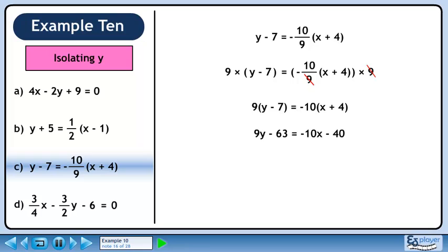Distribute 9 through the brackets on the left side. Distribute minus 10 through the brackets on the right side. Next we have 9y equals minus 10x plus 23.